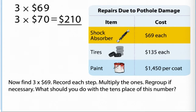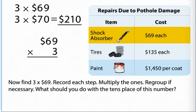Now find 3 times $69. Record each step. Multiply the ones. Regroup if necessary. What should you do with the tens place of this number?